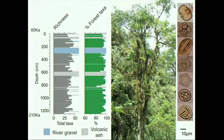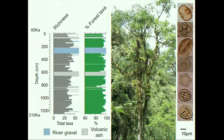Both graphs have layers on them. The blue layers represent landscape-scale change — in this case a river coming through the environment — and the grey layers represent volcanic eruptions. From the percentage forest taxa graph, you can clearly see that during the 150,000 years covered by my samples, the percentage of forest taxa did not fall below 80%, strongly suggesting the region remained forested.